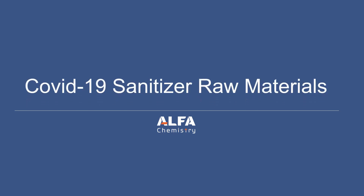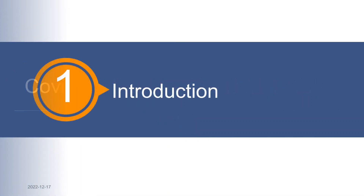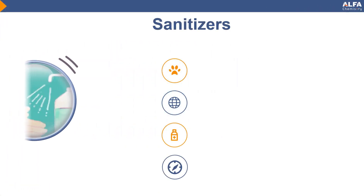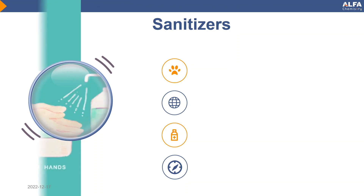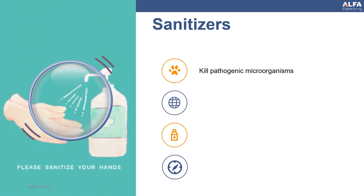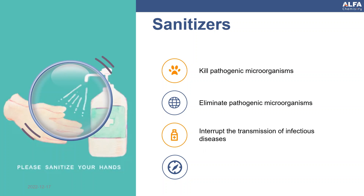COVID-19 Sanitizer Raw Materials. Sanitizers are used to kill pathogenic microorganisms on the transmission medium. They can eliminate pathogenic microorganisms outside the human body, interrupt the transmission of infectious diseases, and achieve the purpose of infection control.